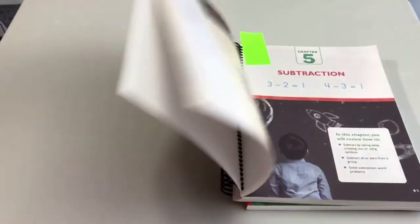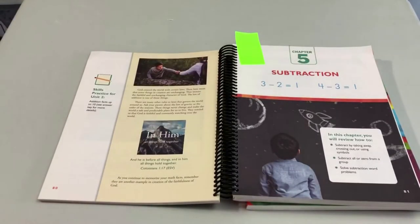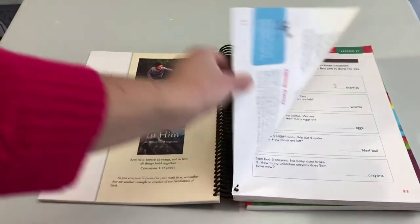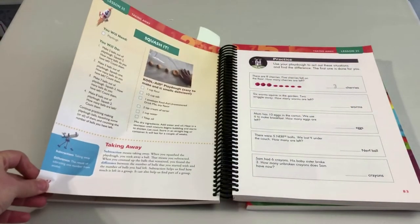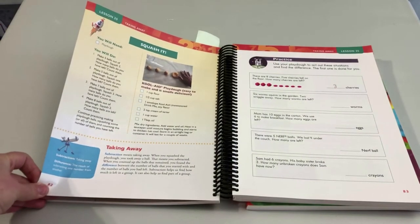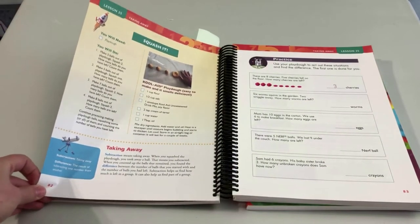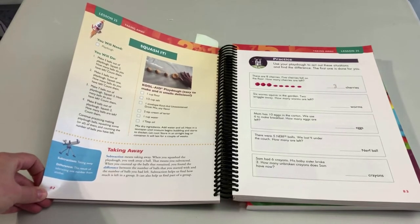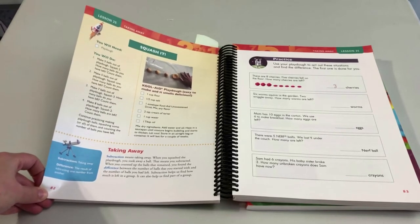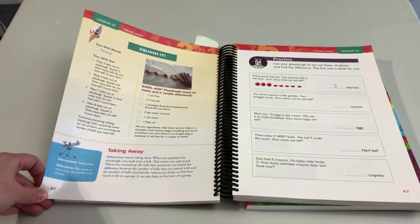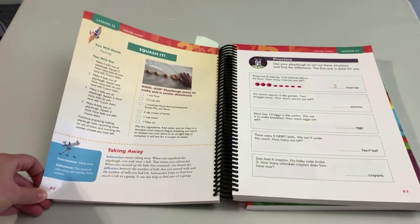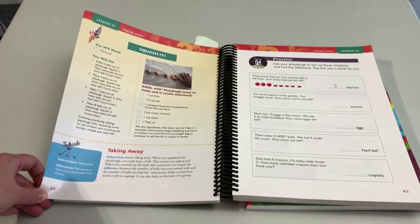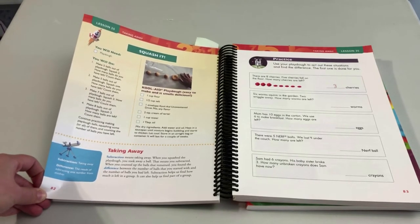Chapter five is subtraction. I start out really assuming that the child hasn't had a lot of exposure to subtraction. So the first thing we do is an activity called Squash It—it's a lot of fun, very popular at my house—where they make a certain number of balls out of Play-Doh and then they squash some of them and count how many are left.